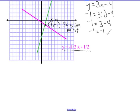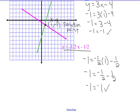If we plug it into the second equation, we get negative 1 equals negative one-half times 1 minus one-half. Negative one-half minus one-half is negative 1. It works for both equations, so the solution is (1, -1).